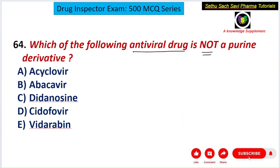Coming back to the question — which of the following is NOT a purine derivative? Acyclovir is a purine derivative, abacavir is a purine derivative, didanosine is a purine derivative, and vidarabine is a purine derivative. So the drug that is NOT a purine derivative is cidofovir. The answer is D choice.